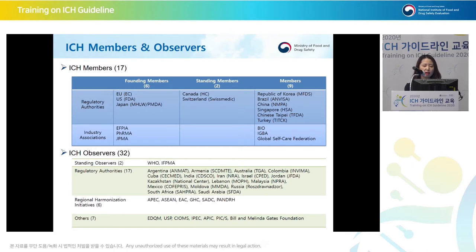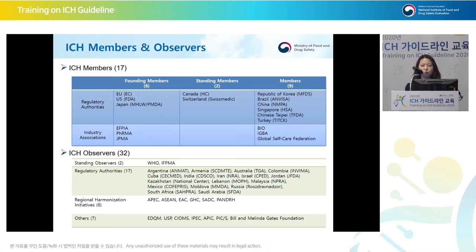Looking at ICH members and observers in more detail, the ICH members include 17 countries or bodies, and ICH observers include 32 countries or bodies. There are two different types of members: regulatory and industry members. They can also be categorized as founding members, standing members, and members. For observers, there are standing observers which include WHO and IFPMA, as well as regulatory authority observers, regional harmonization initiatives observers, and others.